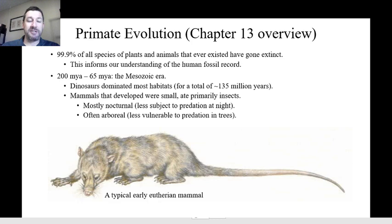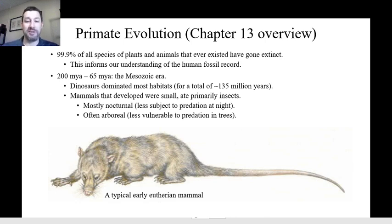The first thing to understand is that basically every species that has ever existed has gone extinct. We will probably go extinct at some point, and all the animals that currently exist on Earth will probably go extinct millions of years from now and be replaced by other animals. That also informs our understanding of the human fossil record — there are many species that existed at one time and don't exist anymore, but we can look at where they fall in the history of evolution.